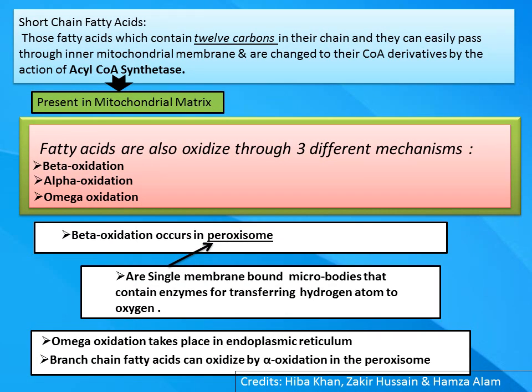Short-chain fatty acids have up to 12 carbons and can easily pass through the inner mitochondrial membrane. They are changed to their CoA derivative by acyl-CoA synthetase, similar to long-chain fatty acids, but this acyl-CoA synthetase is present in the mitochondrial matrix.